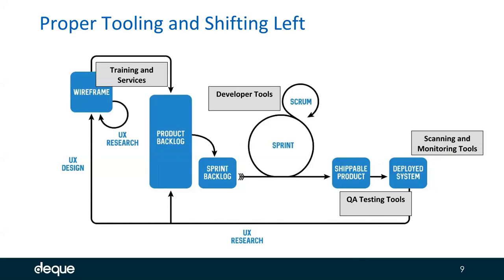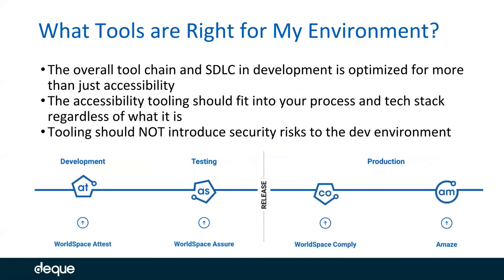What tools are right for your environment? As a product manager, development manager, or someone in the development lifecycle, you have processes and toolchains already in place for many different reasons — architectural decisions to build in the right way, security, and various other considerations around your product or digital property. Adding accessibility testing shouldn't compromise those decisions. You want to bring in accessibility tools that work harmoniously with the toolchain you already have in place.